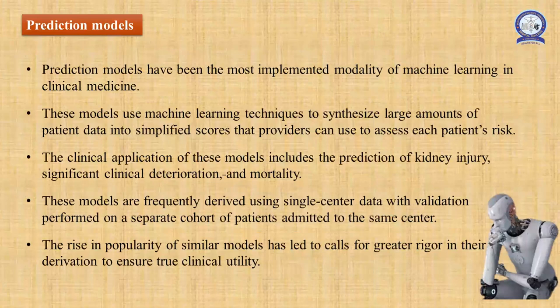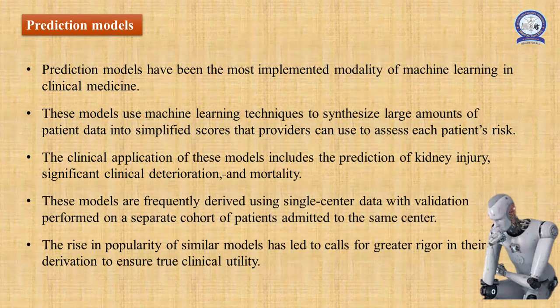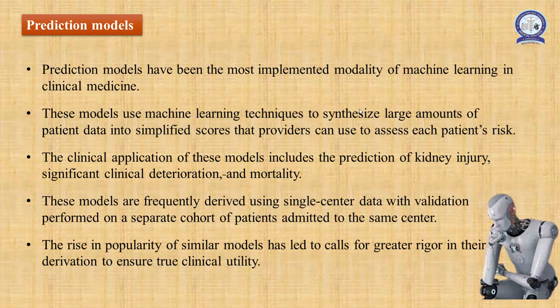There are a few things one should know about artificial intelligence. One is prediction models. Prediction models have been the most implemented modality of machine learning in clinical medicine. These models use machine learning techniques to synthesize large amounts of patient data into simplified scores, which providers can use to assess each patient's risk. Clinical applications include prediction of kidney injury, significant clinical deterioration, and mortality. Prediction models are frequently derived using single-center data with validation performed on a separate cohort of patients admitted to the same center. There is a call for greater rigor in their derivation to ensure true clinical utility.